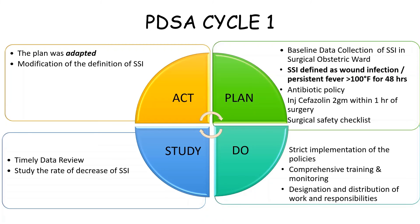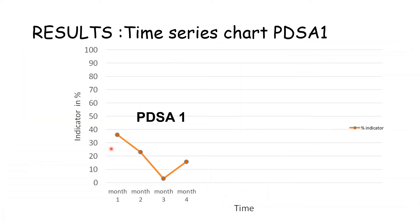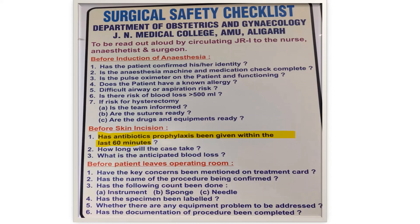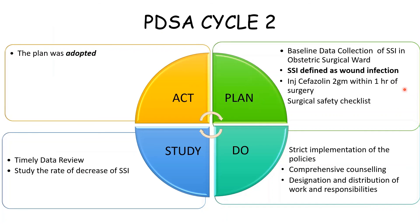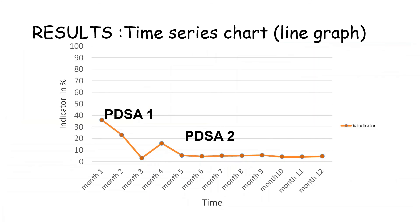We reviewed our data timely and after our first cycle, we found that although the rates of infection were initially decreasing, in month 4 we again saw the rates increasing. This was because many patients with fever from other causes like dengue and malaria were incorrectly diagnosed as having SSI. The second PDSA cycle was made, wherein the definition of SSI was restricted to wound infection only and the plan was adopted. The results are quite satisfying and we are still continuing with the project, with infection rates persistently around 5%.